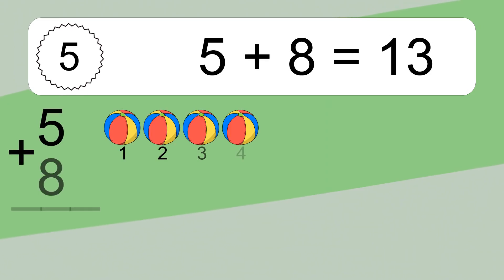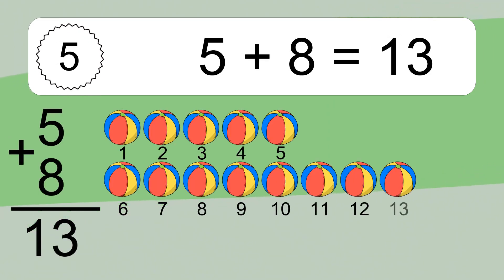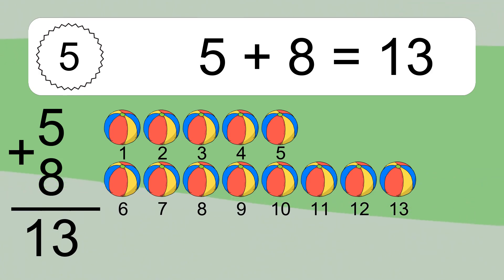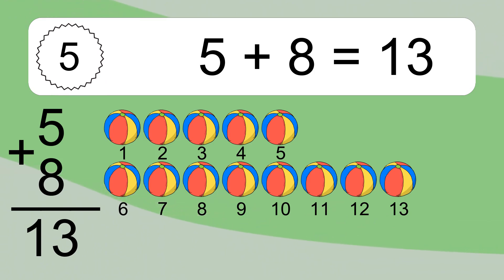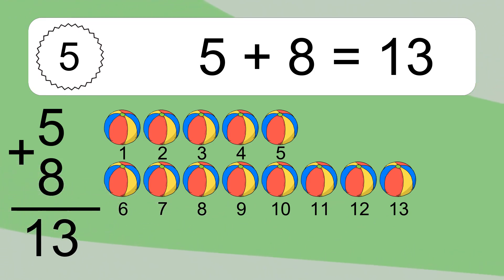5 plus 8 equals what? 5 plus 8 equals 13. Let's count it: 1, 2, 3, 4, 5, 6, 7, 8, 9, 10, 11, 12, 13.